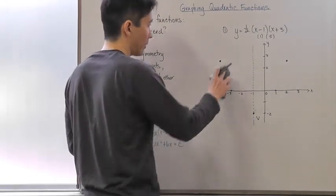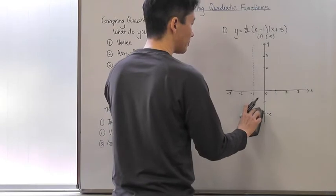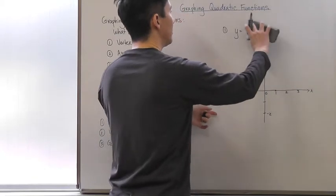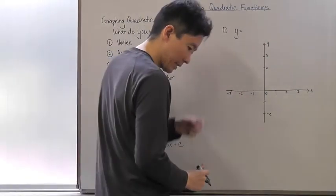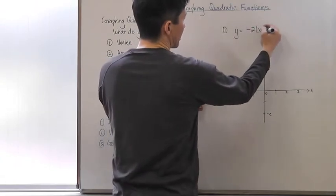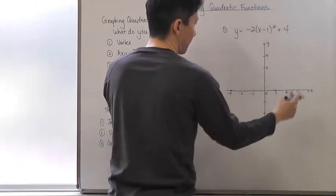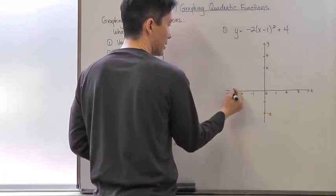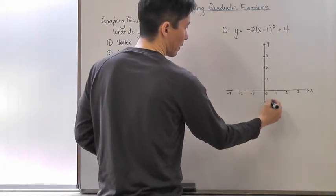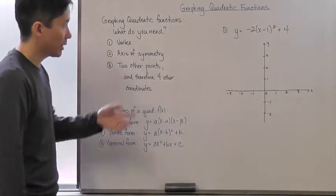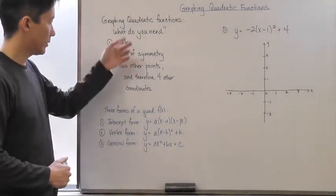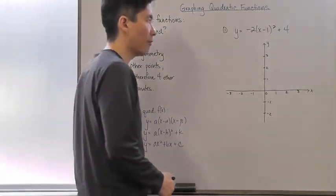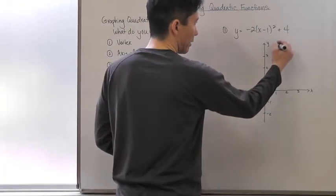Let's look at another example in a different form. Say we have negative two times (x minus one) squared plus four. This is the equation after completing the square — it's in vertex form. The vertex is given to us directly: it's at (one, four). So the vertex is right there, and we also immediately know the axis of symmetry.